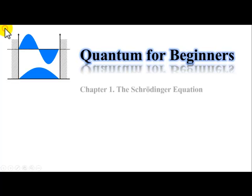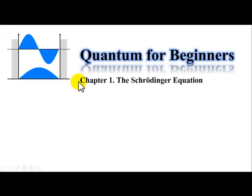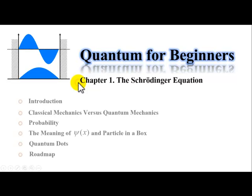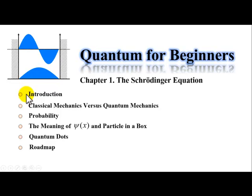In the first chapter, The Schrodinger Equation, we will be discussing six topics, namely: Introduction, Classical Mechanics versus Quantum Mechanics, Probability, the meaning of wave function and particle in the box, Quantum Dots, and the roadmap for the entire course.